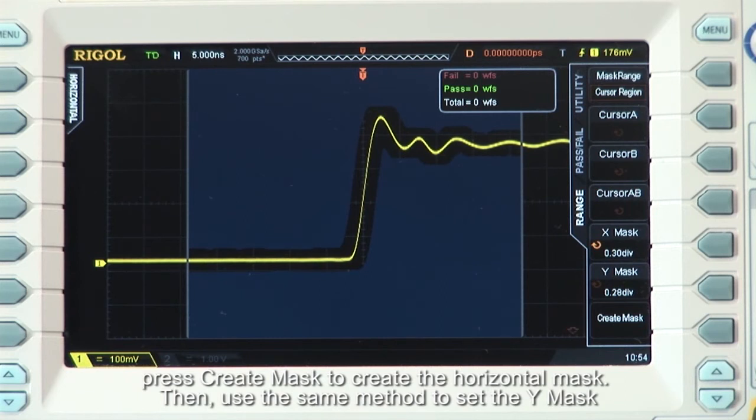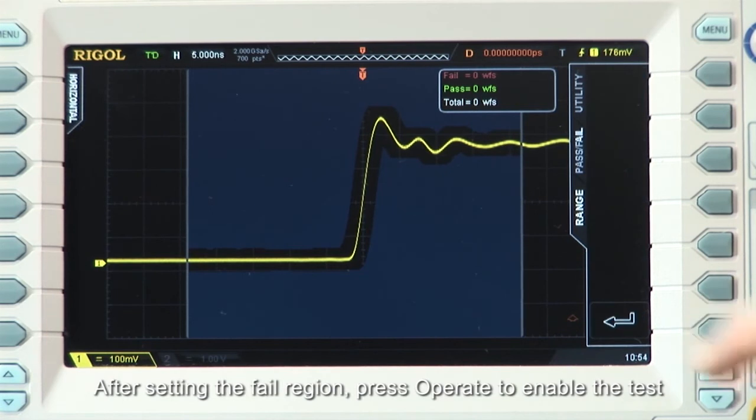Then use the same method to set the Y mask. After setting the fail region, press Operate to enable the test.